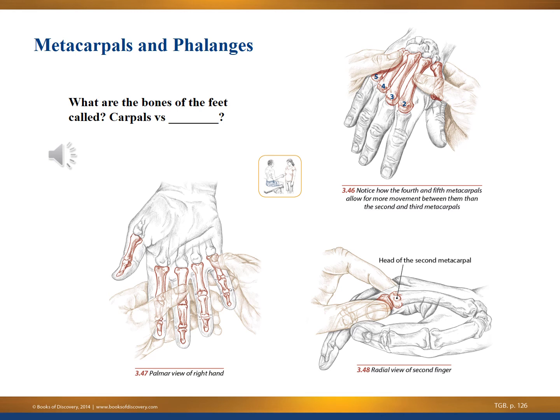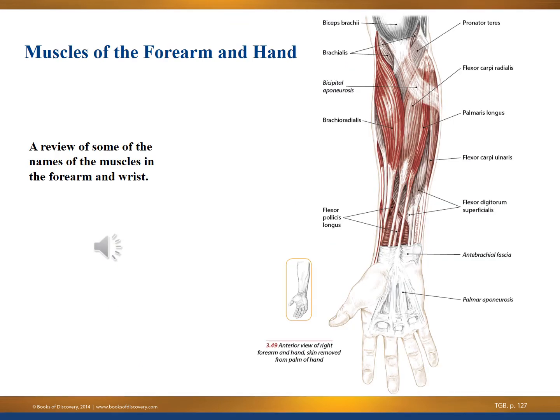The metacarpals are in the hand; in the feet, the equivalent bones are the metatarsals, and the ankle bones are the tarsals. Identifying the major muscles of the forearm and hand: the biceps brachii attaches across the elbow joint; we move into the brachialis (upper) and brachioradialis (forearm). The flexor pollicis longus is one of the finger tendons. On the far right, you see pronator, flexor carpi radialis, palmaris longus, flexor carpi ulnaris, and flexor digitorum — all flexors of the forearm.